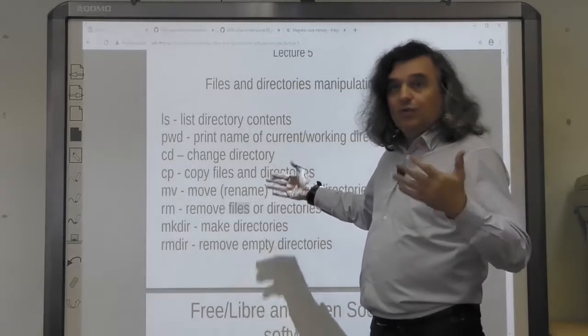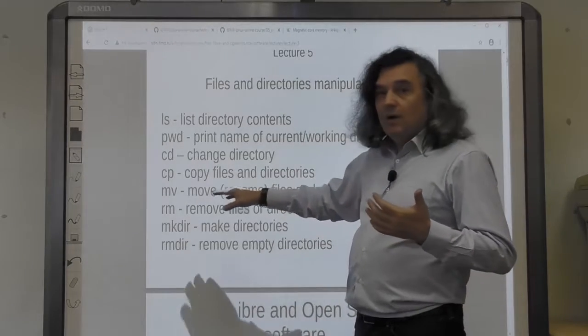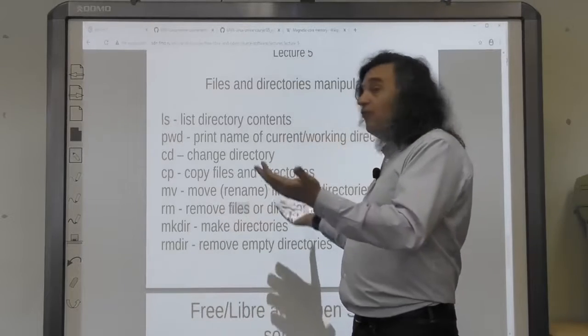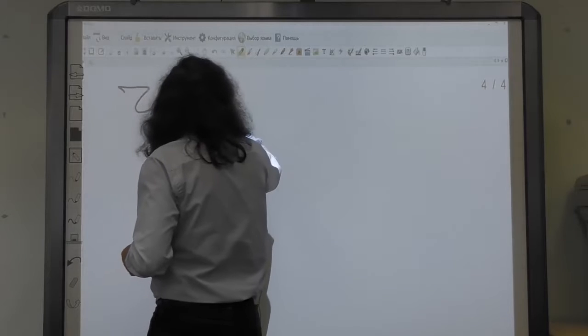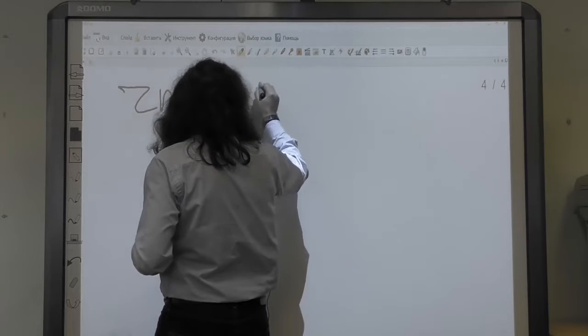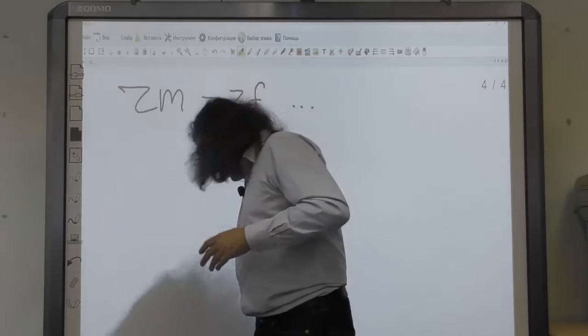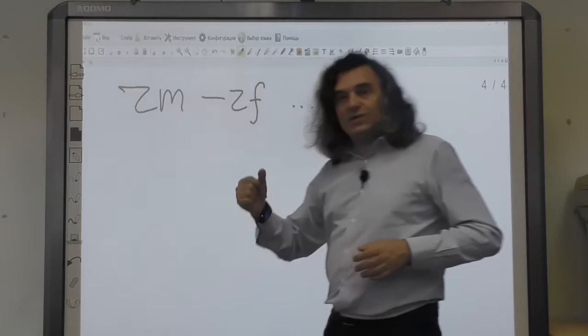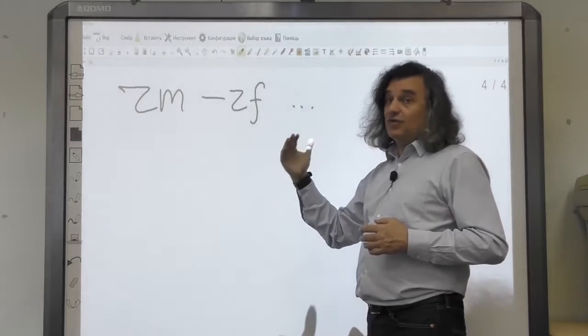mv moves or renames files and directories. rm removes files or directories. rm -rf something means recursive delete without asking for confirmation.